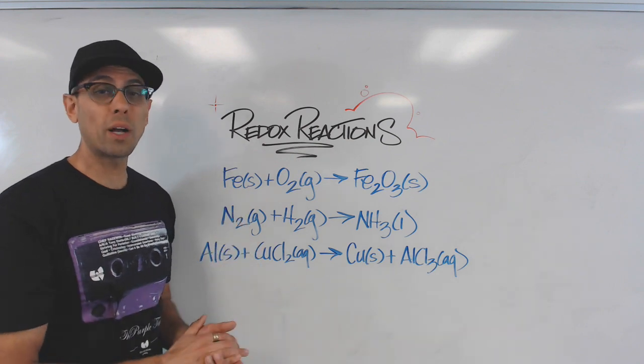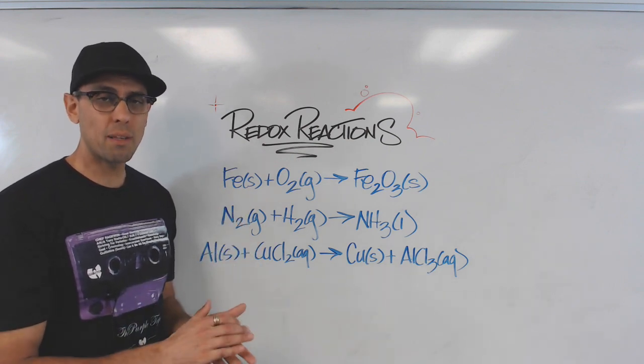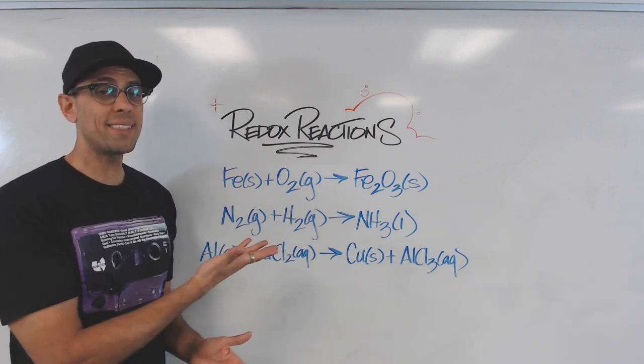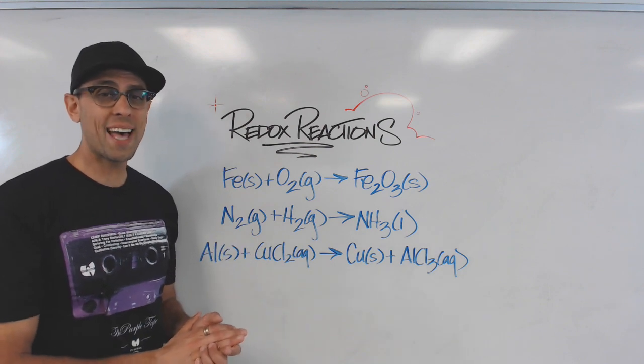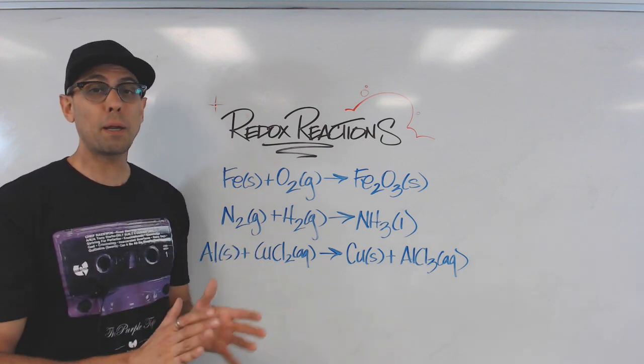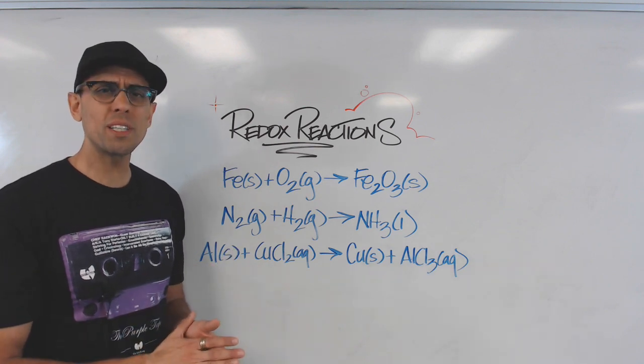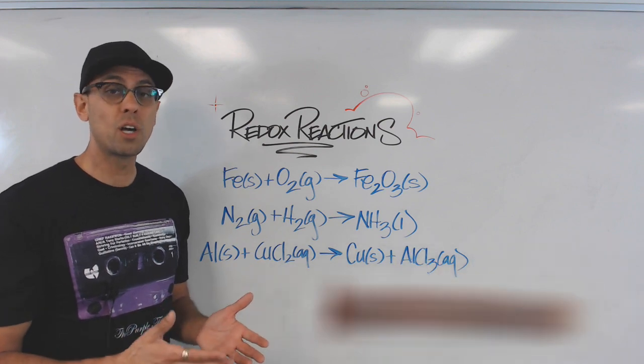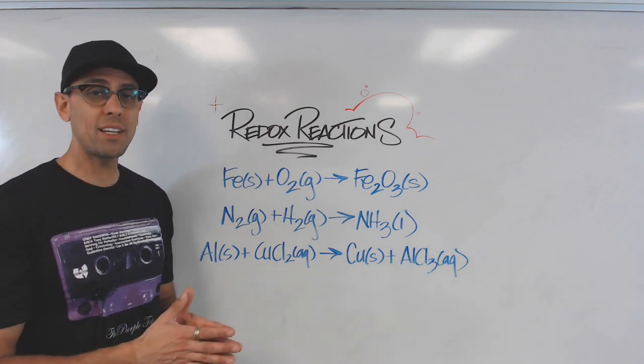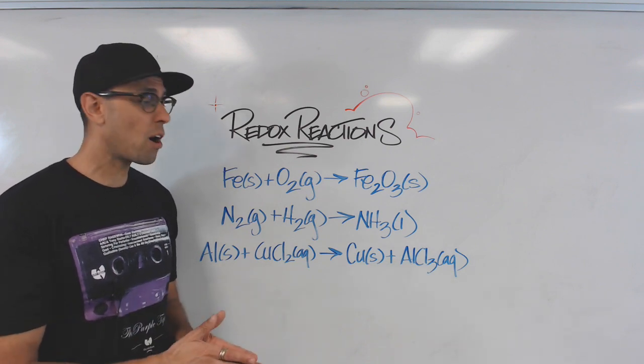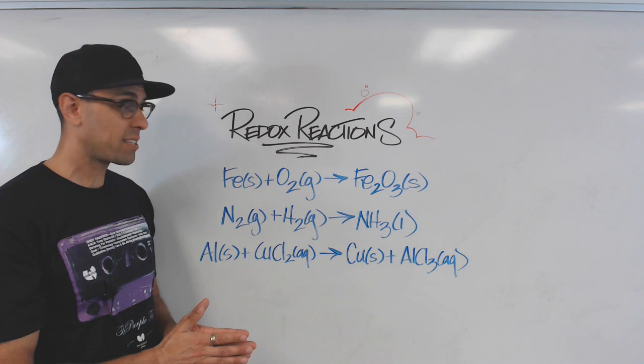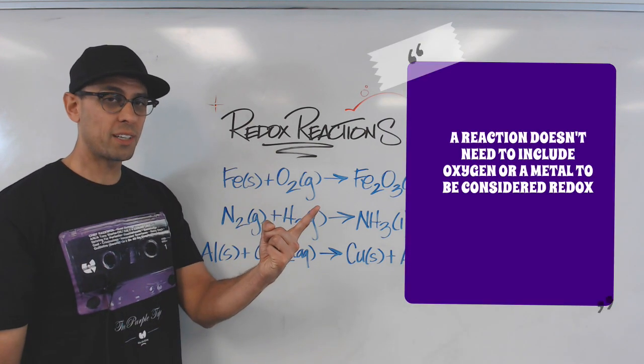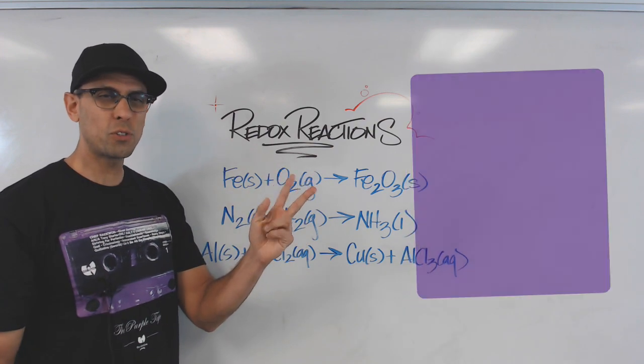Myth number one that we're going to dispel is that redox reactions, because the ox comes from oxidation, always involve the element oxygen. As you can see, only one of these three reactions has oxygen as a player. Another big misconception is that redox reactions always involve metals, probably because metallic substances like nails forming rust is an example of oxidation, but by no means are metals always involved. Only two out of these three reactions have a metallic element. So redox reactions don't require oxygen, and they don't require metals. So what are they?